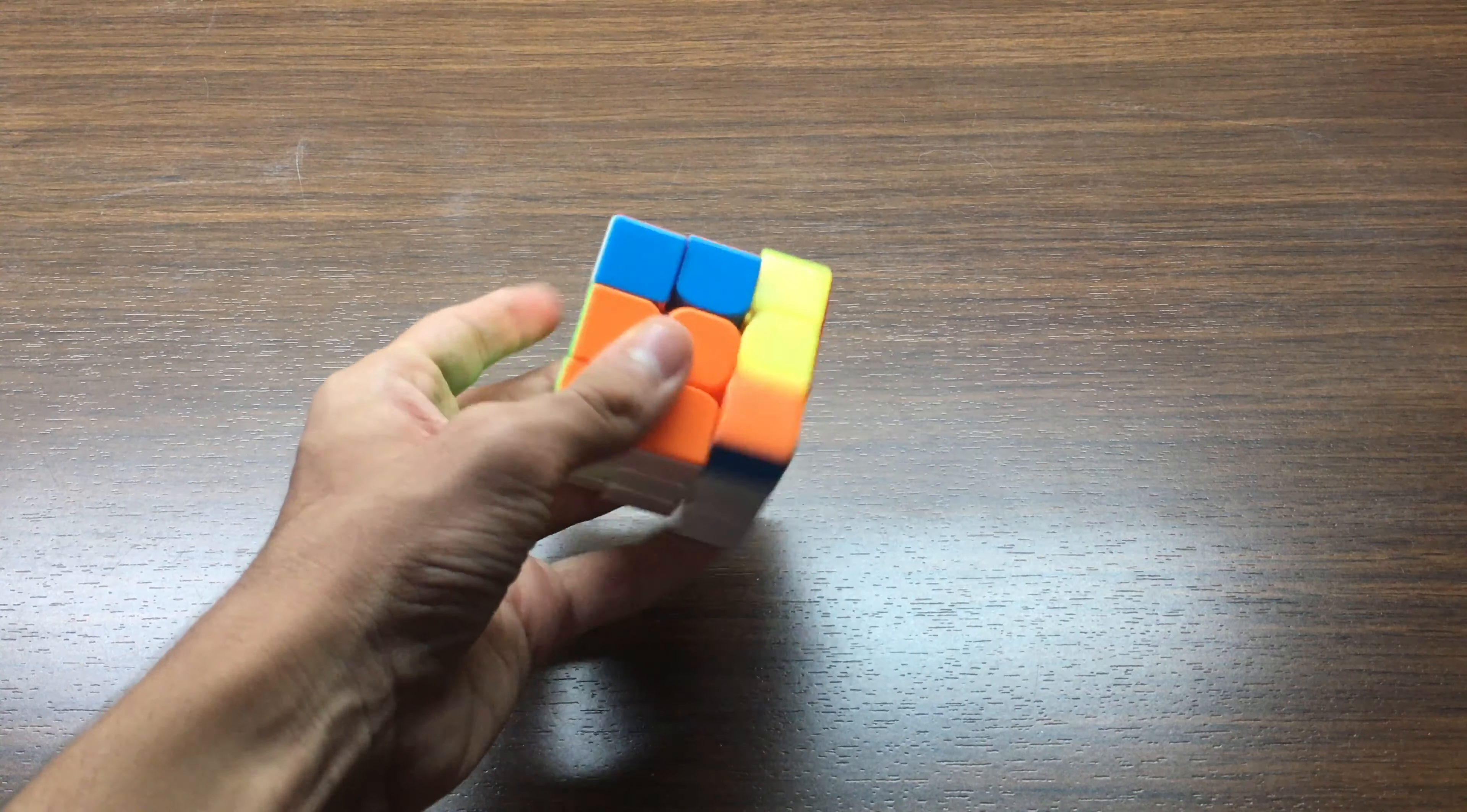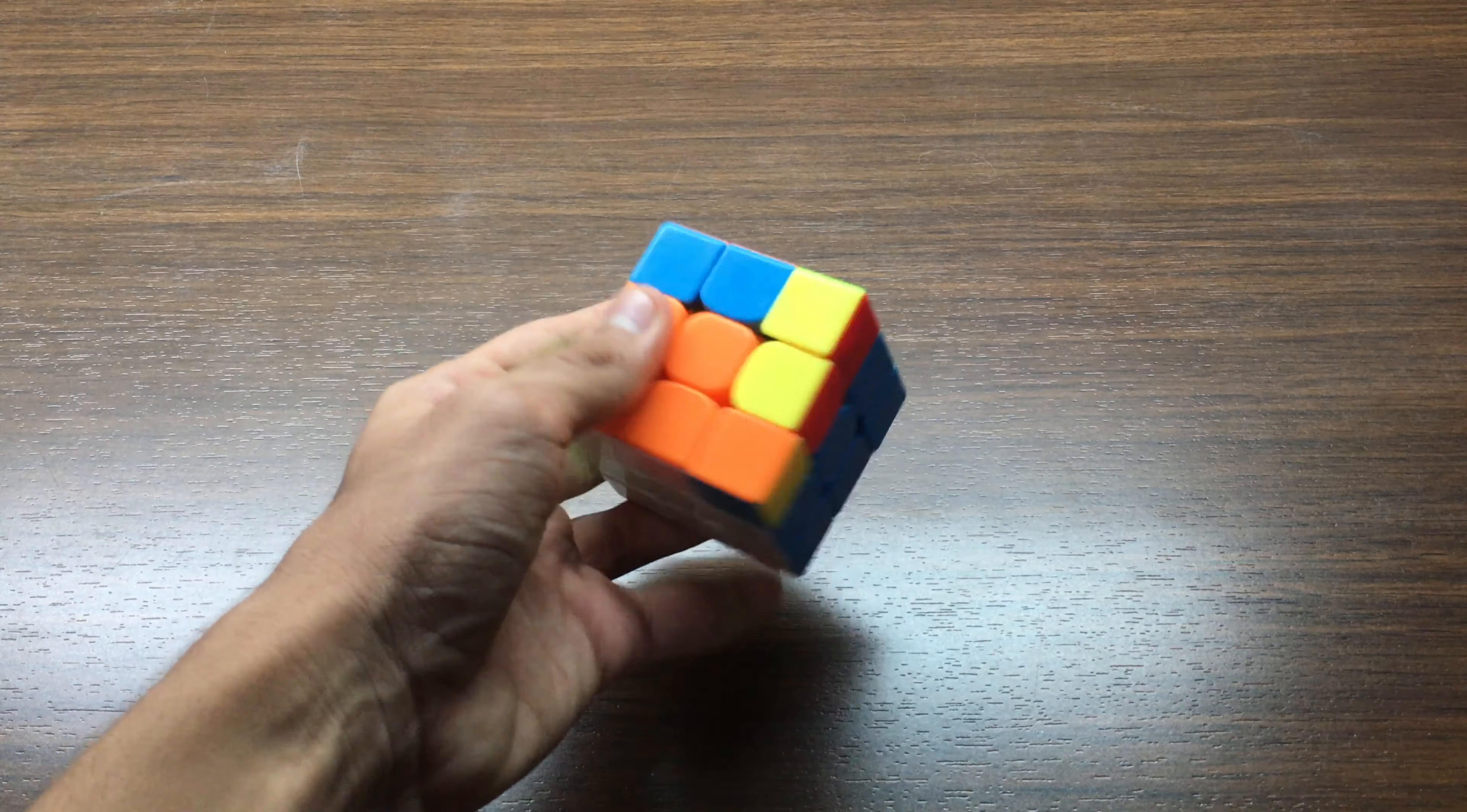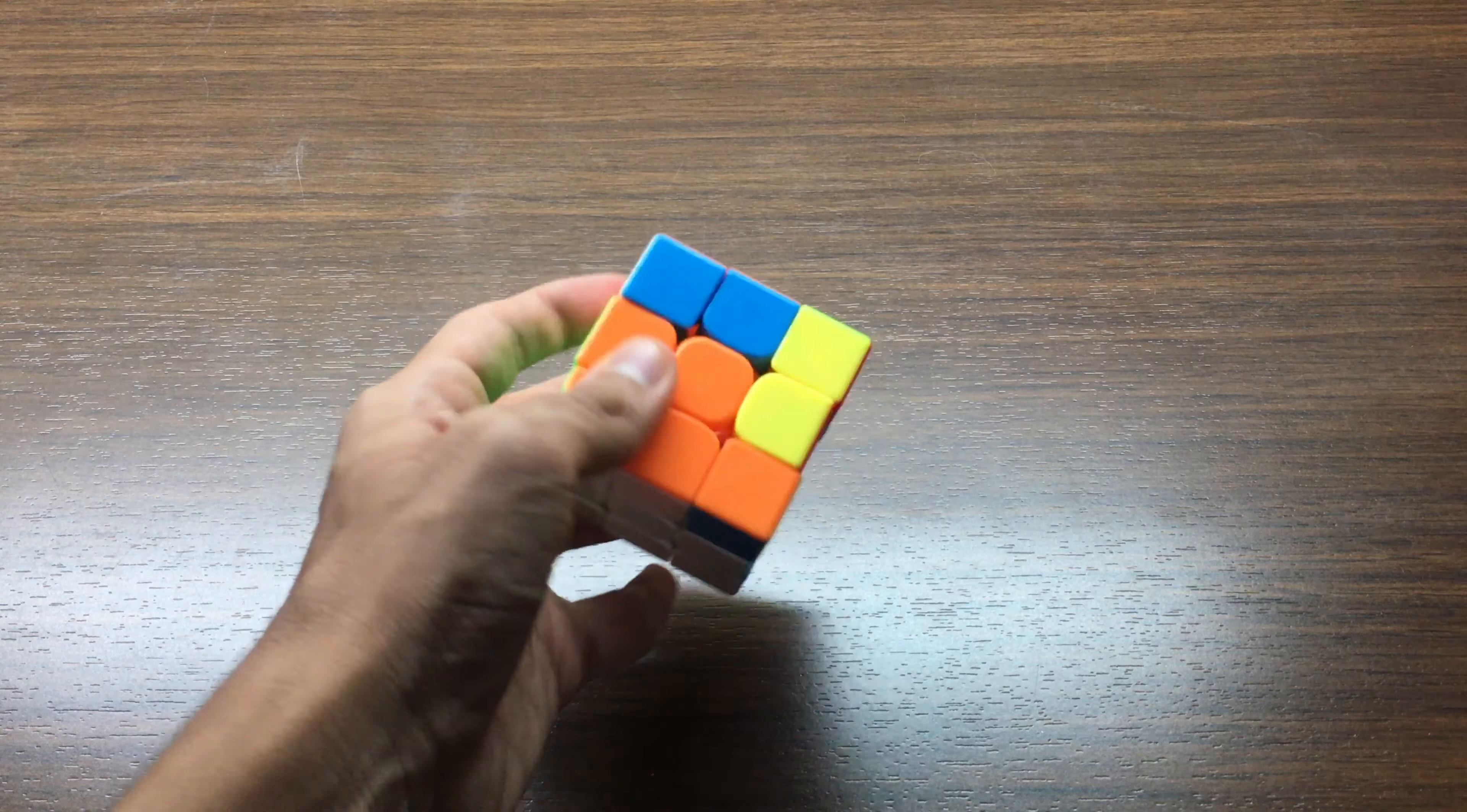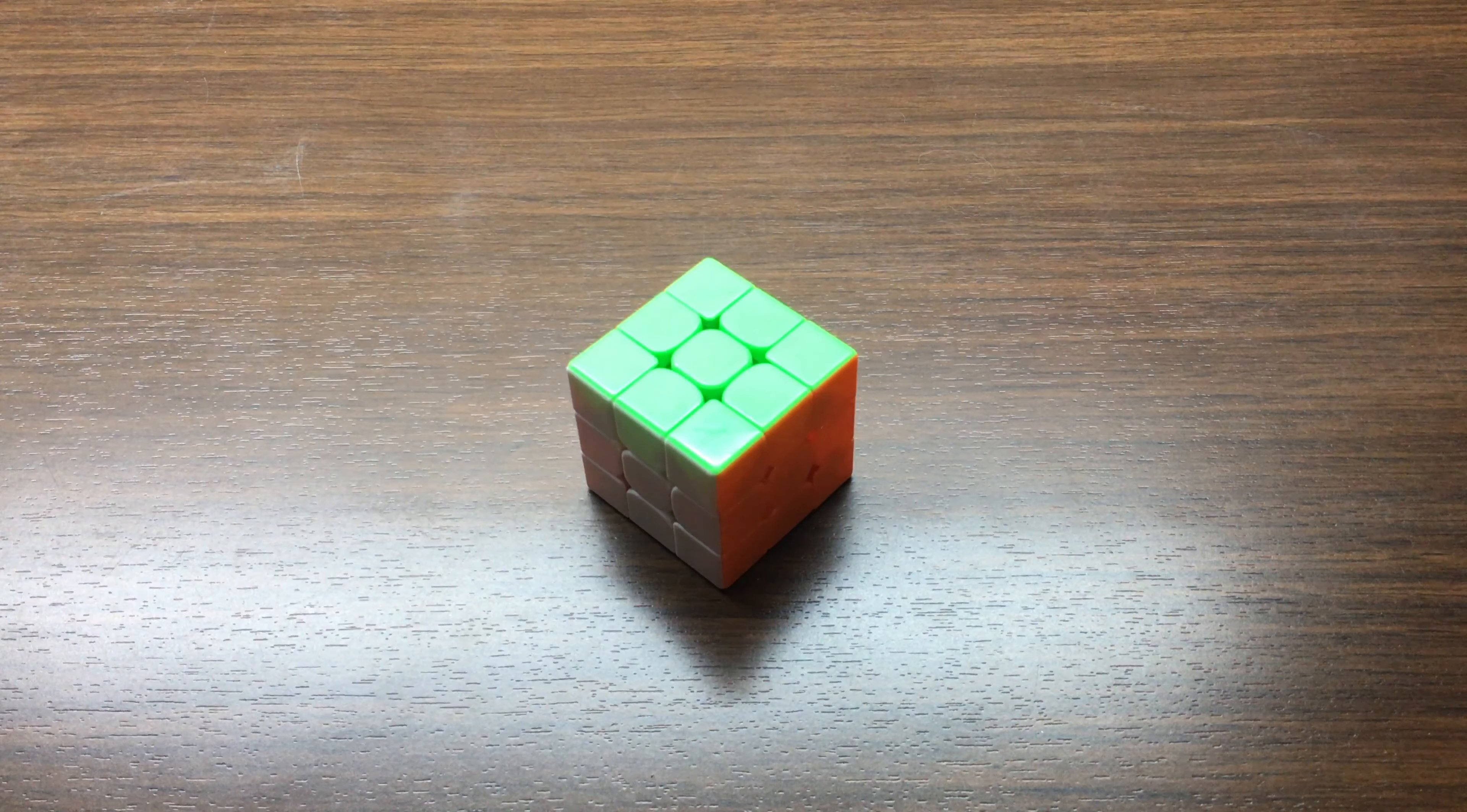So here's 3x3 OH and my main is also the MF3RS 2M. My goal for this competition is to get a PR average and hopefully a sub 25 single.